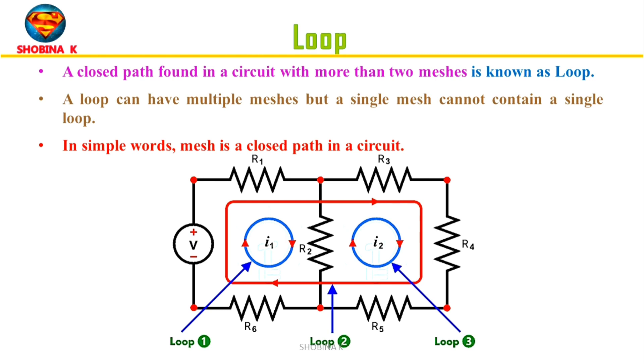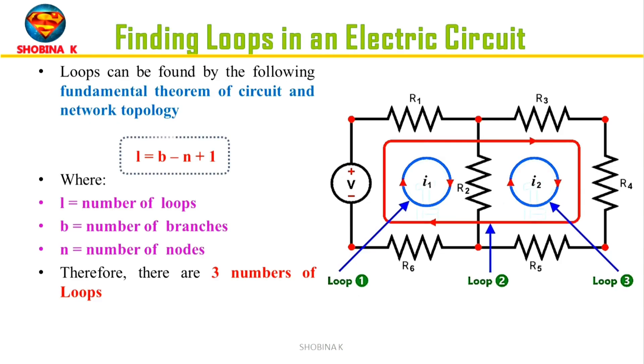And then we have loop. A closed path found in a circuit with more than two meshes is known as loop. That is, a loop can have multiple meshes but single mesh cannot contain a single loop. In simple words, a mesh is a closed path in a circuit.